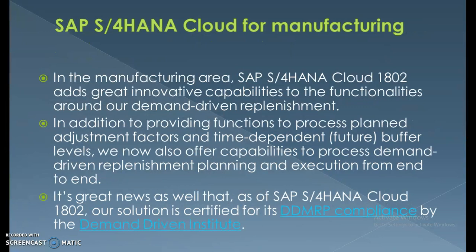In the manufacturing area, SAP S4 HANA Cloud 1802 adds innovative capabilities around demand-driven replenishment. Today's business runs on demand — the higher the demand for a product or service, the faster we need to serve within the customer's expected timeframe. In addition to processing plan adjustment factors and time-dependent buffer levels, we now offer capabilities for demand-driven replenishment planning and execution end to end. SAP S4 HANA Cloud 1802 is certified for DD MRP compliance by the Demand Driven Institute.